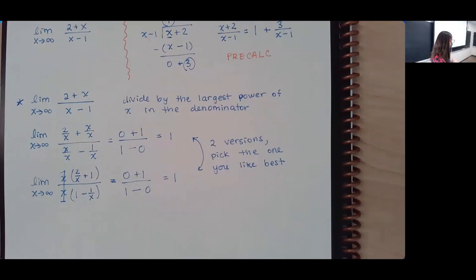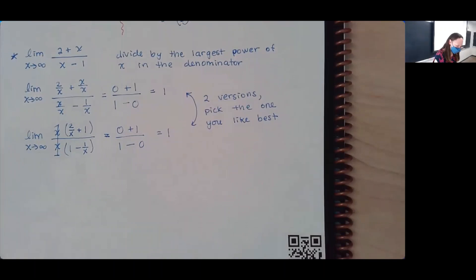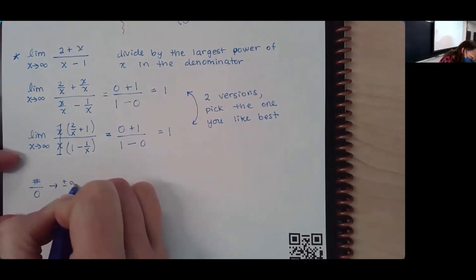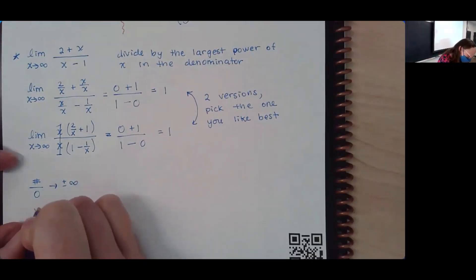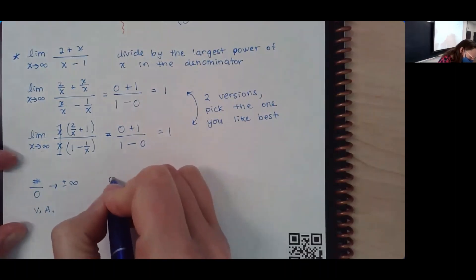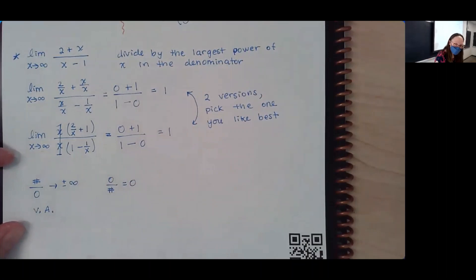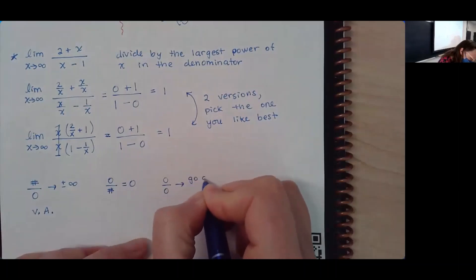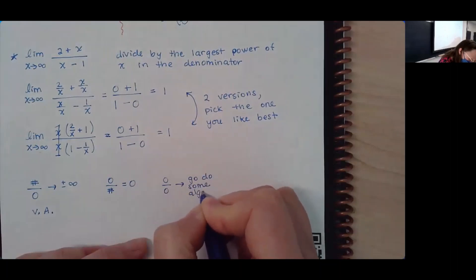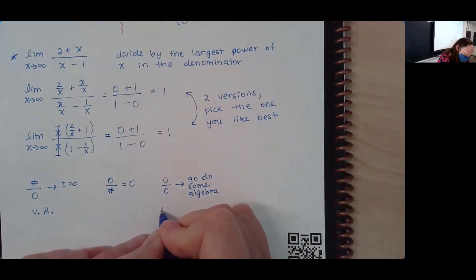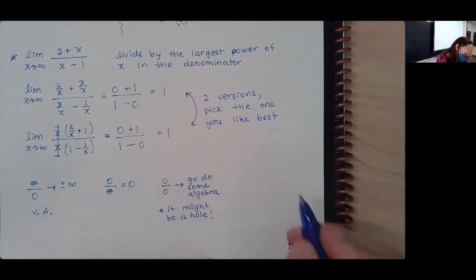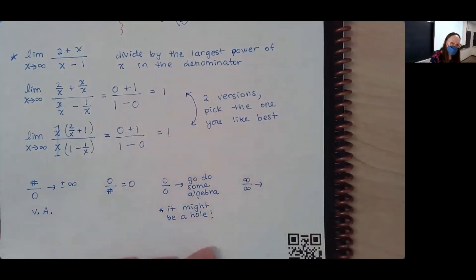Quick recap: a number divided by 0 is positive or negative infinity — that's a vertical asymptote. 0 divided by a number is 0 — good times. 0 divided by 0 says go do some algebra — it might be a hole. And infinity over infinity also says go do some algebra — this usually shows up with horizontal asymptotes.